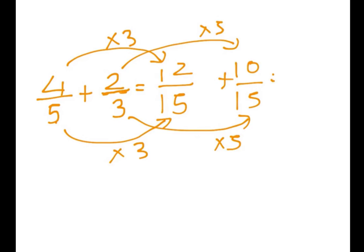Then, you would just add the 12 and the 10. 12 plus 10 would give us 22 over 15, and that would be our answer. And that's it. There you have it. That's how you add fractions.